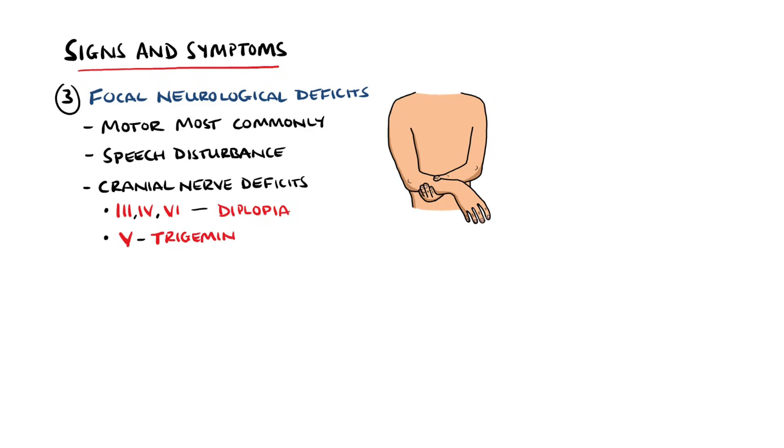Involvement of the trigeminal nerve, or cranial nerve 5, can give trigeminal neuralgia. And with involvement of the facial nerve, which is cranial nerve 7, there can be a facial paralysis. Typically, this is a peripheral facial palsy, also known as a lower motor neuron pattern,